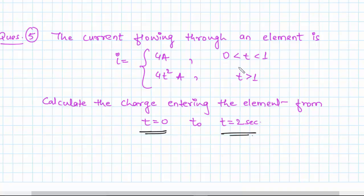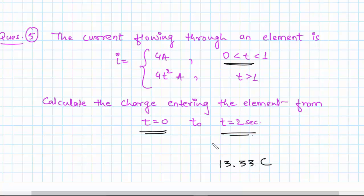You need to calculate the charge entering the element from t equals 0 to t equals 2 seconds. The only thing to take into consideration is the value of time — for one case take the limit from 0 to 1, and for the other case take the limit from 1 to 2. The final answer is 13.33 coulombs, which is the total charge entering the element between t equals 0 and t equals 2 seconds.